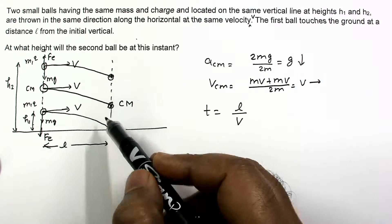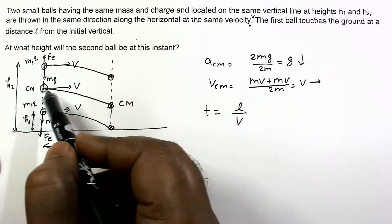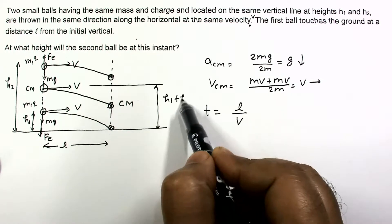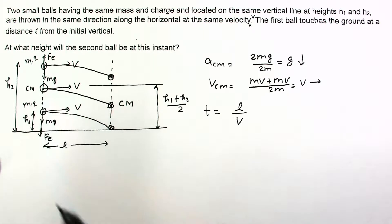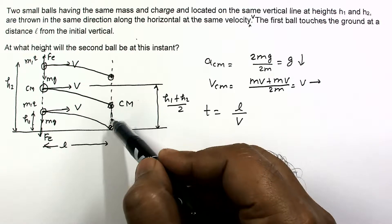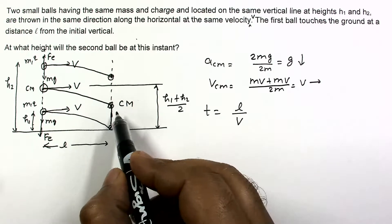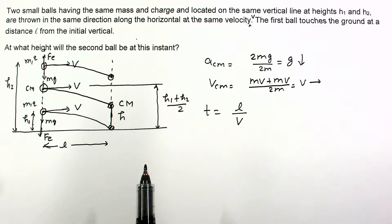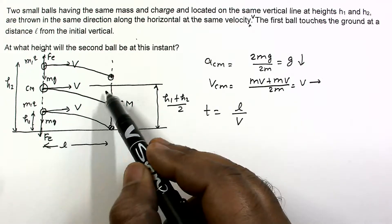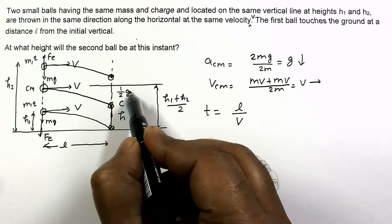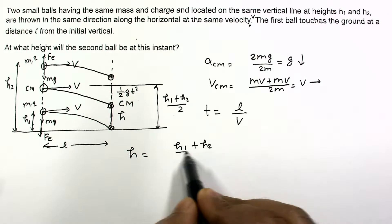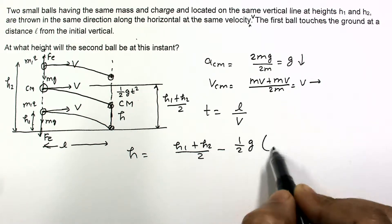Since the masses are equal, the initial height of the center of mass is (h1 + h2)/2, as it is at the midpoint. The center of mass falls under gravity with zero initial vertical velocity, so it drops a vertical distance of (1/2)gt². The final height H of the center of mass is therefore H = (h1 + h2)/2 − (1/2)g(l/v)².